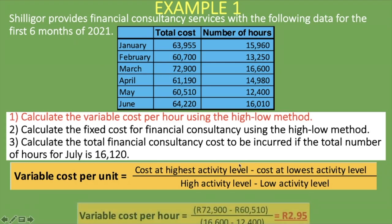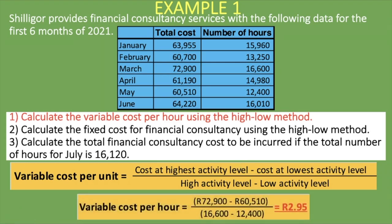So here is how it looks: R72,900 (cost at highest activity level) minus R60,510 (cost at lowest activity level), divided by 16,600 hours (high activity level) minus 12,400 hours (low activity level). This gives us a variable cost per hour of R2.95. That is how easy it is to calculate the variable cost per hour using the high-low method. Keep that in mind — R2.95 — as we'll need it to calculate the fixed cost.